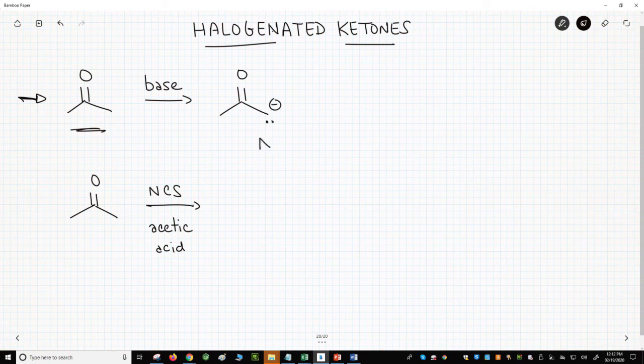Enolates are strong nucleophiles. We can then treat the enolate with a weak electrophile, things like alkyl halides or other carbonyl compounds, to make new molecules. Enolates are incredibly flexible intermediates.